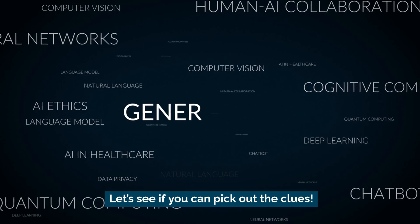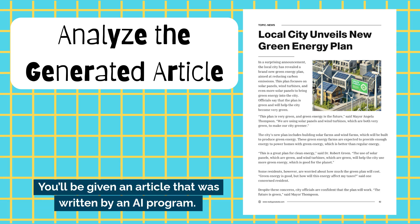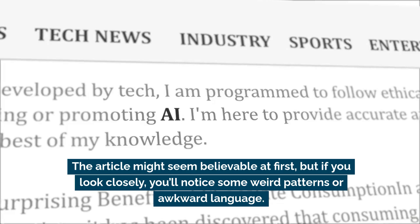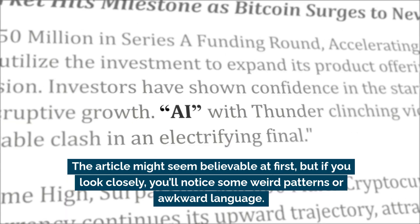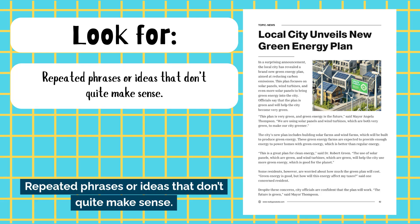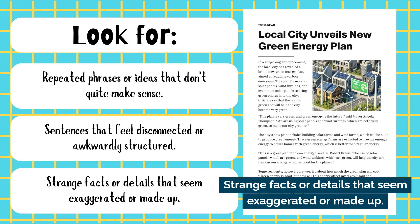Step one: analyze the AI generated article. You'll be given an article that was written by an AI program. Your task is to read the article and look for clues that suggest it wasn't written by a human. The article might seem believable at first, but if you look closely you'll notice some weird patterns or awkward language. Here's what to look for: repeated phrases or ideas that don't quite make sense, sentences that feel disconnected or awkwardly structured, and strange facts or details that seem exaggerated or made up.